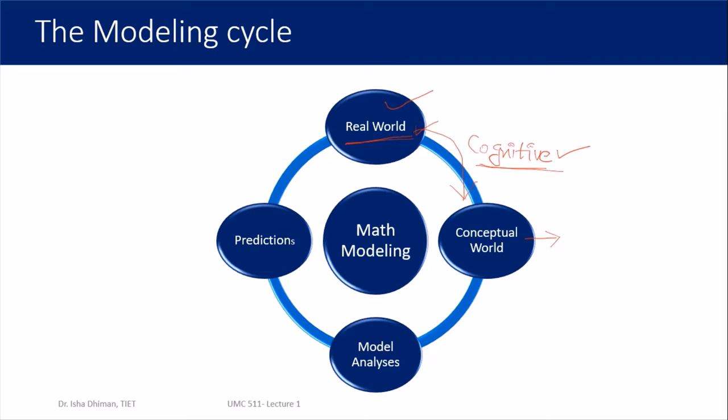In the conceptual world, some things are assumed and there are limitations — it is not a hundred percent exact representation of the real world. After the conceptual world, we physically construct the model and look at it, then perform analysis of it. After analysis, we predict or interpret the results, and then give these predictions back to the real world.